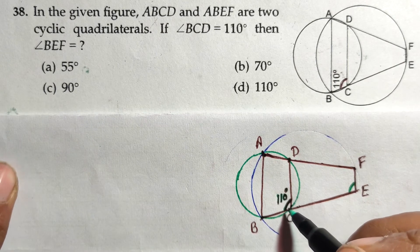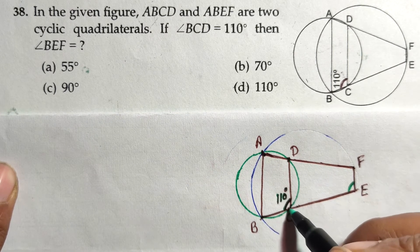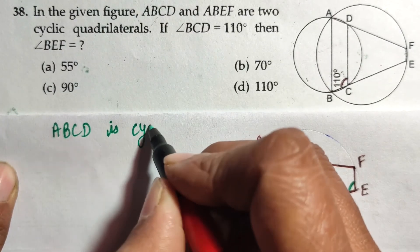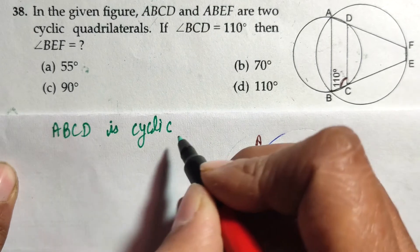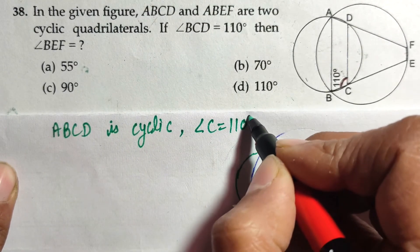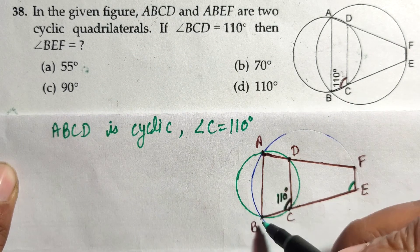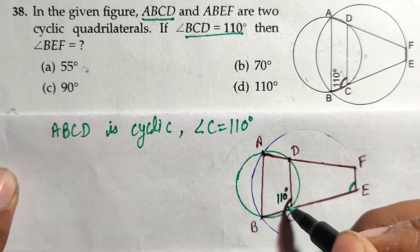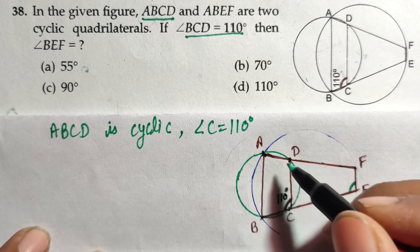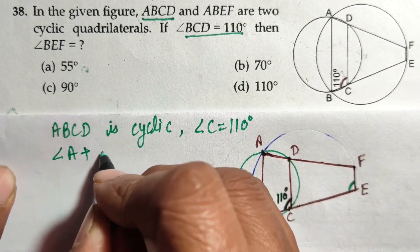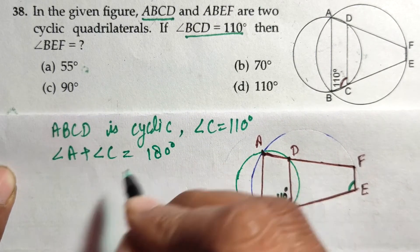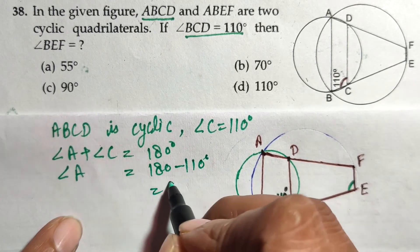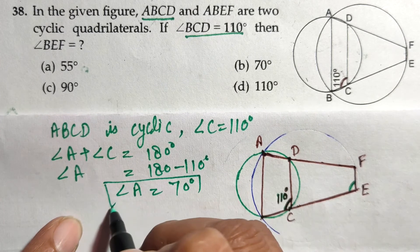With the help of angle C, we can find another angle. ABCD is a cyclic quadrilateral. Using the cyclic quadrilateral property: opposite angles sum to 180 degrees. So angle A plus angle C equals 180 degrees. Angle C is 110 degrees, so angle A equals 180 minus 110, which is 70 degrees.